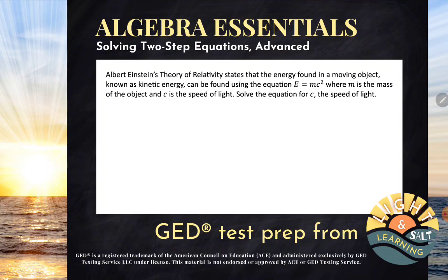Let's take a look. It says, Albert Einstein's theory of relativity states that the energy found in a moving object, known as kinetic energy, can be found using the equation E equals mc squared, where m is the mass of the object and c is the speed of light.